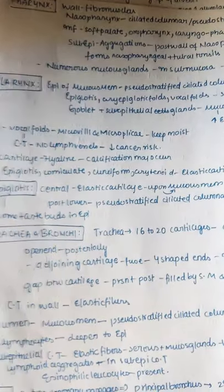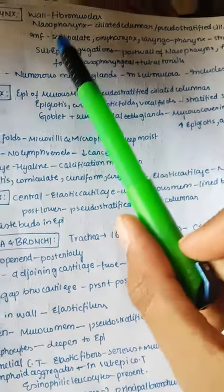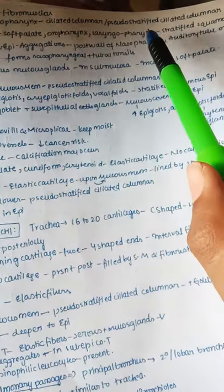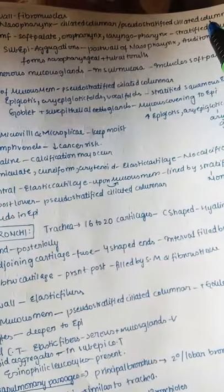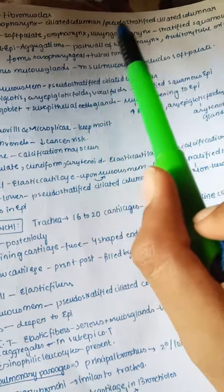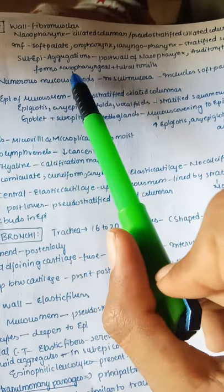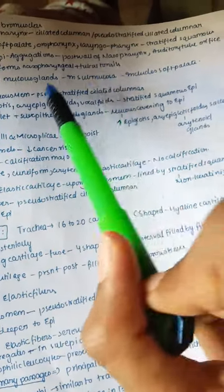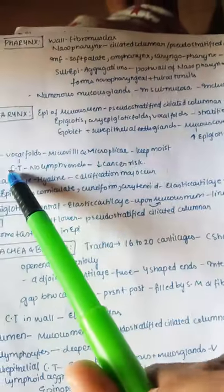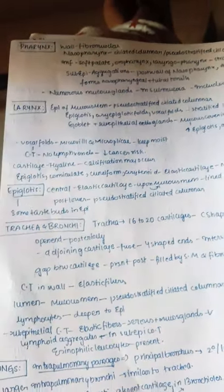Now let us check out the pharynx. The pharynx wall is mainly fibromuscular. The nasopharynx, near the nasal area, is lined by pseudo-stratified ciliated columnar epithelium. Inferiorly, the soft palate, oropharynx, and laryngopharynx are made up of stratified squamous epithelium. Sub-epithelial aggregations are present in the posterior wall of the nasopharynx. The auditory tube orifice forms the nasopharyngeal and tubal tonsils. There are numerous mucus glands in the submucosa, including in the soft palate.